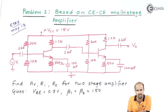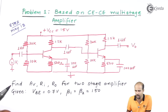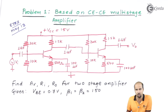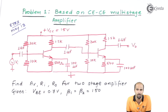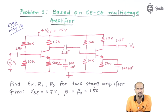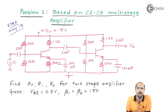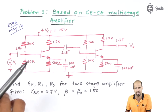We'll first look at the particular steps. When we are calculating the value of AV, we require the value of GM, RE, or R pi. For that, we have to have the value of currents IC and IE, and the values of R pi, RE, and GM. That is done by using DC analysis. So let's start with the DC analysis.